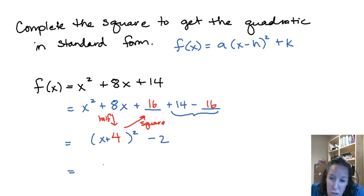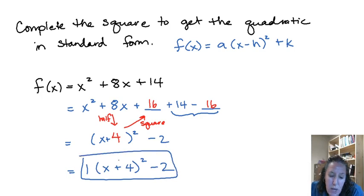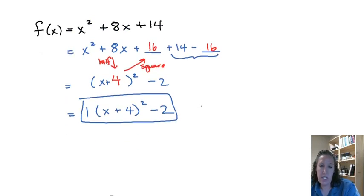And then we can take what's left over: our 14 minus 16 is equal to negative 2. And so our standard form here, I'll go ahead and write it just to that one out front just to emphasize that our a is 1, x plus 4 squared minus 2. That one doesn't have to be there, I was just to emphasize that it's in that form.